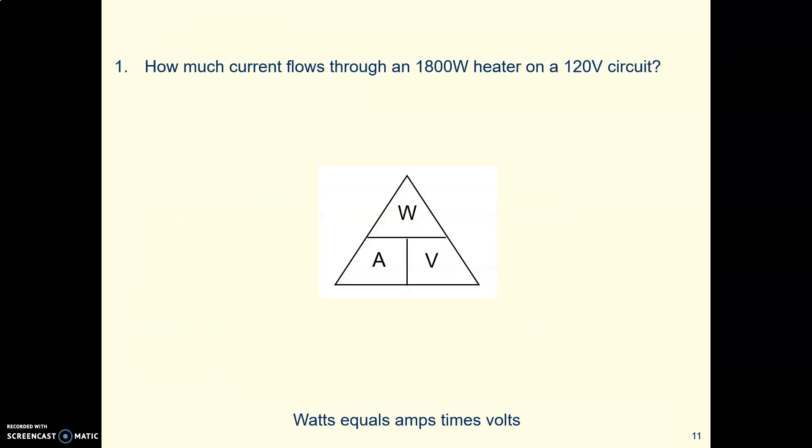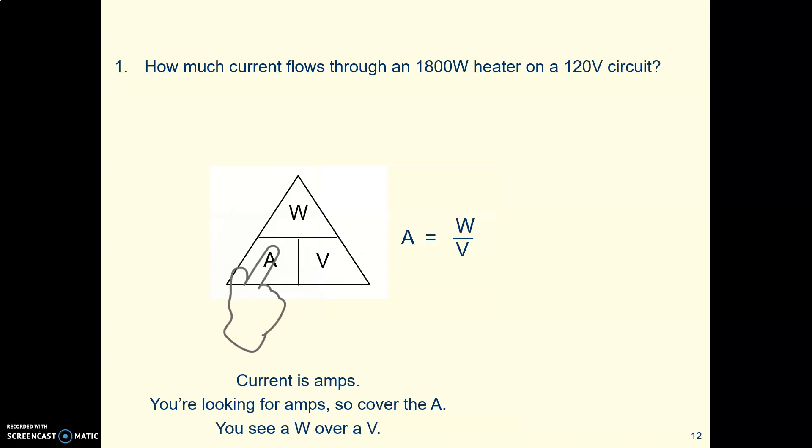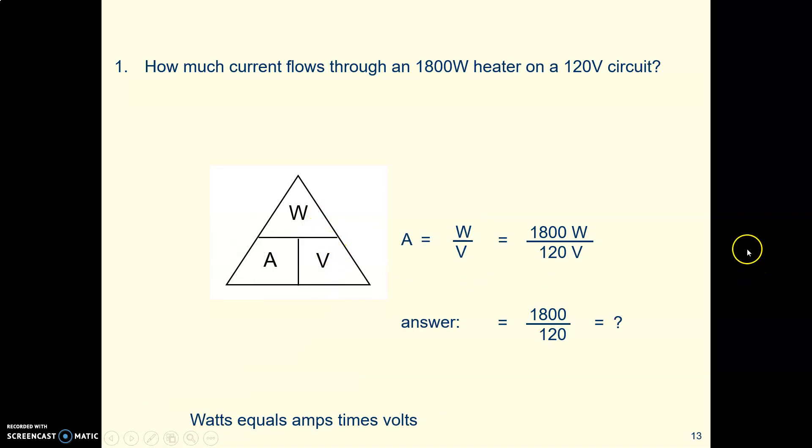That first question says, how much current is flowing through an 1800 watt heater on a 120 volt circuit? So in other words, you've got a let's say a space heater, it's rated at 1800 watts, and you plug it into the wall, a standard 120 volt receptacle in the wall, how much current is going to flow through there. If you're trying to find current, remember that current is measured in amps, so amps is what you're looking for. So with your finger cover up that A. What you're left with is a W sitting up above a V, watts over volts.